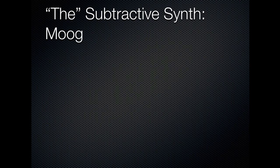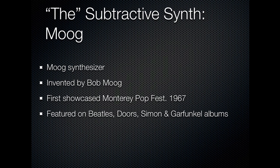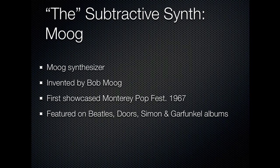You've probably heard of Bob Moog, who invented the first widely used subtractive synthesizer. According to Wikipedia, it was first showcased in 1967 at the Monterey Pop Festival, and you'll hear it on a lot of albums from that era — from about 1968 through the 70s. It was featured on Abbey Road by the Beatles, which was the last album they recorded. You'll also hear it on various albums by The Doors, Simon and Garfunkel, and several others. So that's subtractive synthesis in a nutshell.